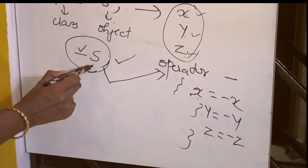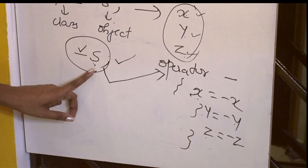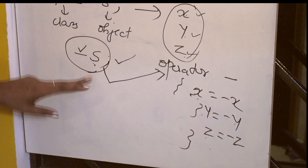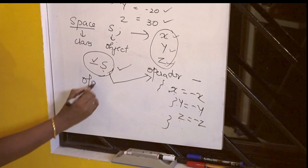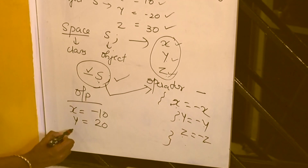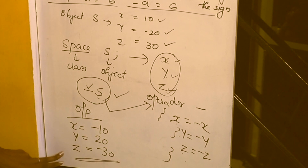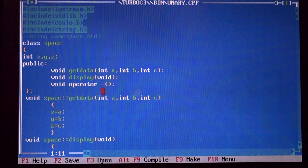Simply invoking the member function named operator minus will change the sign of every data member of the class. The initial values are 10, minus 20, and 30. After execution of the program, the output will be: x equals minus 10, y equals 20 (that is, minus of minus 20 is 20), and z equals minus 30. So next we will see the program that explains the concept of unary operator overloading — unary minus is overloaded to change the sign of data members of a class.